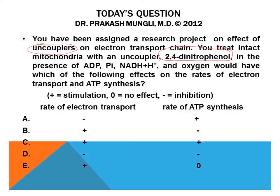First, you need to know the effect of an uncoupler on the electron transport chain. The ETC has four complexes: Complex I, II, III, and IV. Complexes I, III, and IV pump protons from the matrix side of the mitochondria into the intermembrane space. Once a sufficient gradient is built in the intermembrane space, protons begin to move back into the matrix through ATP synthase — the F₀ subunit.